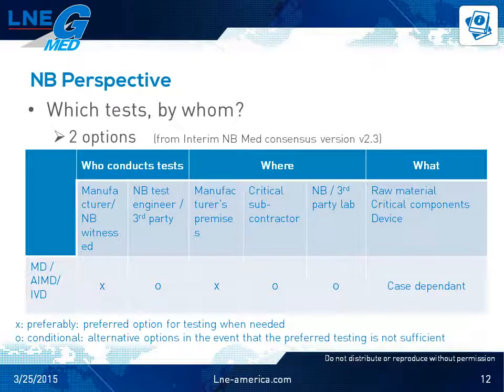One major question is who will be performing the tests. A draft guidance document issued by TeamNB in October 2014 describes the different options, including preferred and alternative ones. Testing could be performed by the manufacturer witnessed by the notified body, by the notified body's test engineer when it has capacity, or by a third-party laboratory. Similarly, testing can occur at the manufacturer's premises, at the critical subcontractor, or at the notified body or third-party laboratory. In all cases, the subject of testing can be the device or a part of it, from a critical component down to a raw material.